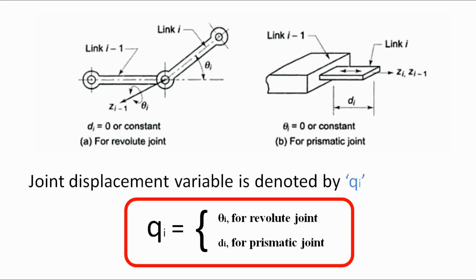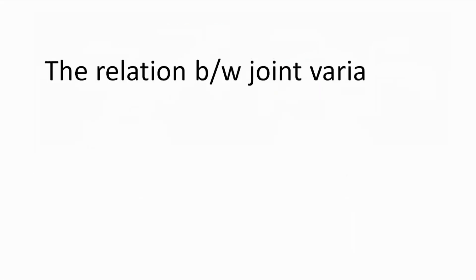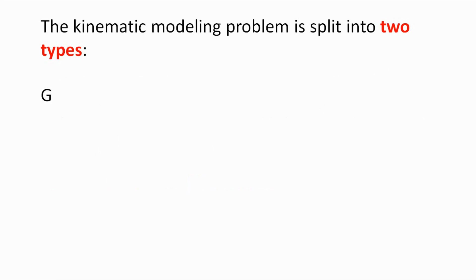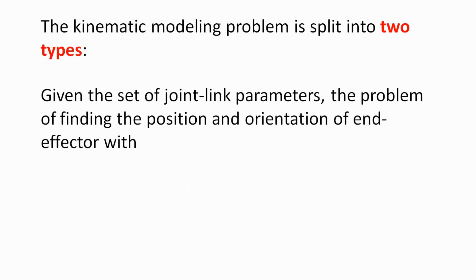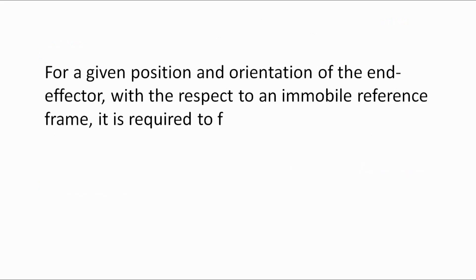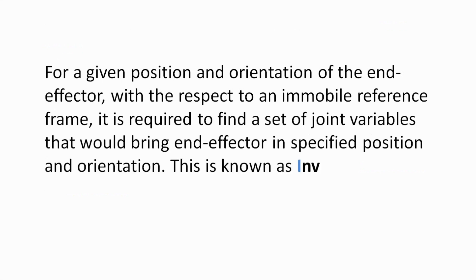The joint displacement variable is denoted by qᵢ: qᵢ equals θᵢ for a revolute joint, and qᵢ equals dᵢ for a prismatic joint. The relation between the joint variables and the position and orientation of the end effector is the kinematic model. The kinematic modeling problem is split into two types. If we are given the joint and link parameters and need to find the position and orientation of the end effector, this is known as forward kinematics.